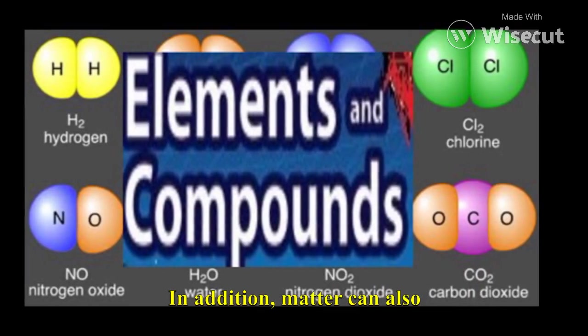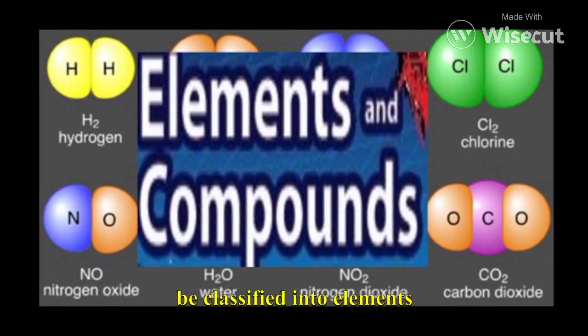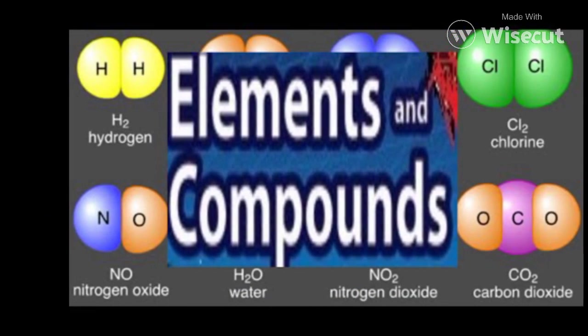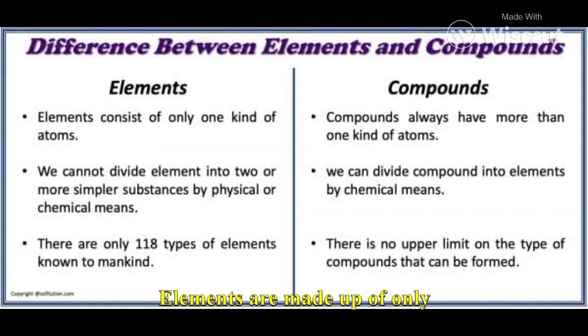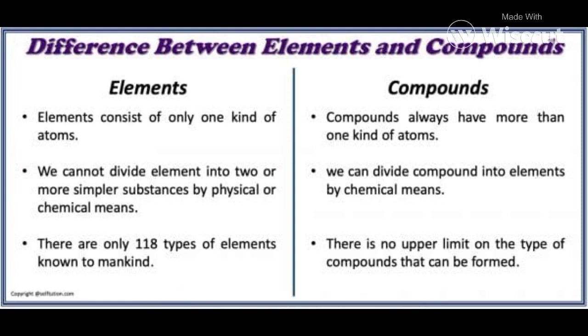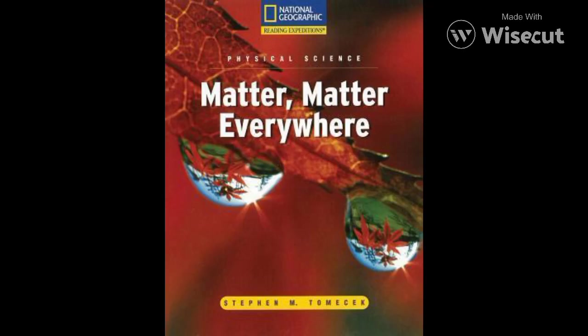In addition, matter can also be classified into elements and compounds. Elements are made up of only one type of atom, and compounds are made up of multiple types of atoms that are chemically bonded together.